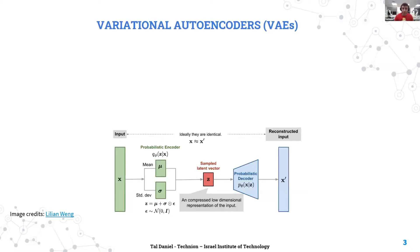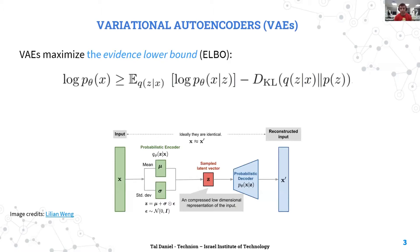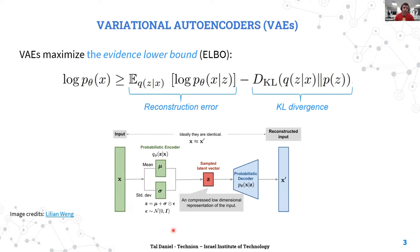Variational autoencoders, or VAEs, are models that belong to the explicit density estimator models family. VAEs try to approximate the density of the data by maximizing the evidence lower bound, or the ELBO. The ELBO can be broken into the reconstruction error, just like in regular autoencoders, and the KL divergence between an auxiliary distribution Q and some simple prior P. The only difference between autoencoders and VAEs is the output of the encoder: instead of outputting a deterministic latent code, it outputs a distribution of latent codes.